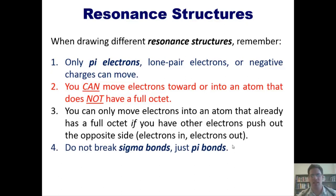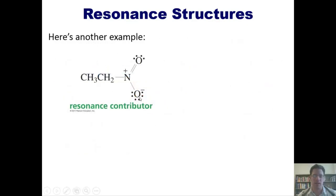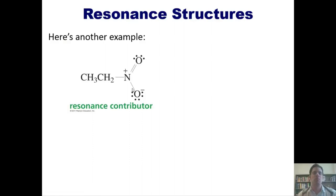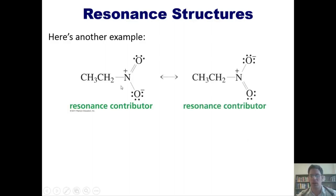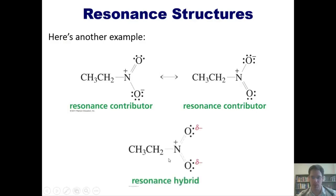Let's look at some examples. This molecule is called ethyl nitrate. If you take the formal negative charge on this oxygen — caused by extra lone pairs — and swing those lone pairs down to form a nitrogen-oxygen double bond, you can't leave it that way because nitrogen would then have 10 electrons around it. So you must push the pi electrons up onto the top oxygen, giving it a formal negative one charge. These are two resonance contributors; ethyl nitrate exists somewhere in between, represented as a resonance hybrid.